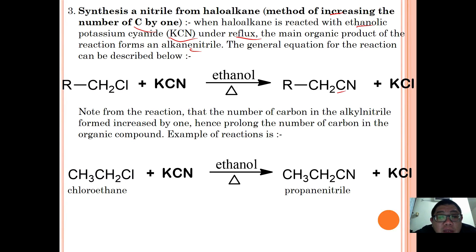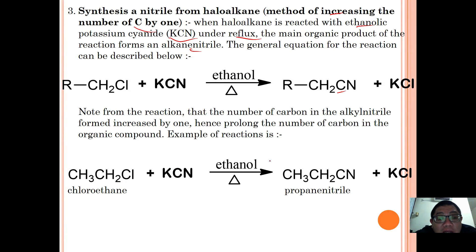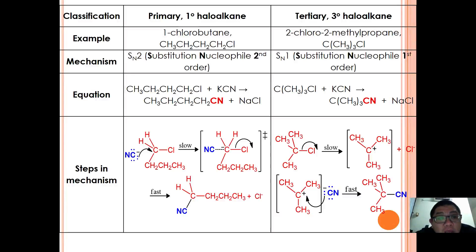In this reaction there is an addition of carbon in the alkyl nitrile, hence increasing the number of carbons in the organic compound. For example, starting from chloroethane, reacting with potassium cyanide in ethanol under reflux forms propanenitrile. From the name you can see that the number of carbons has increased by one.